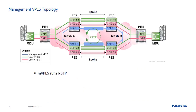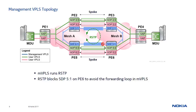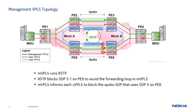The RSTP configuration is required only on the MVPLS. In this example, RSTP informs the MVPLS to block SDP 5.1 on PE6 in order to avoid the forwarding loop. Then, each UVPLS that uses this spoke on PE6 inherits the RSTP state and blocks its own spoke. As a result, the forwarding loop is prevented for both managed UVPLSes.